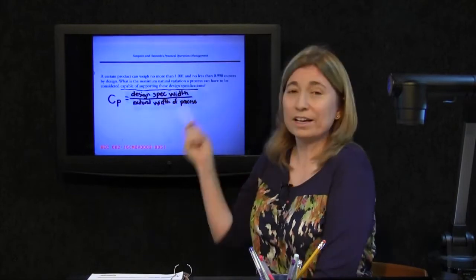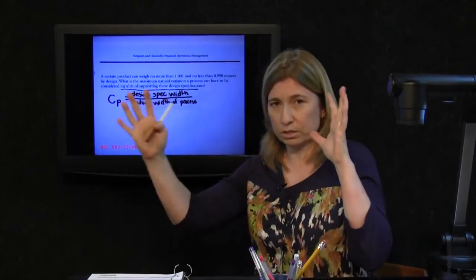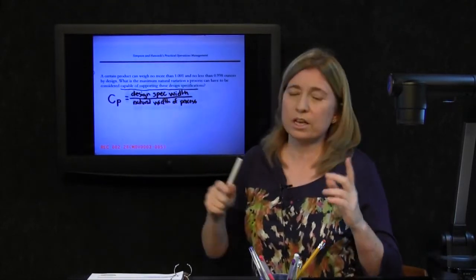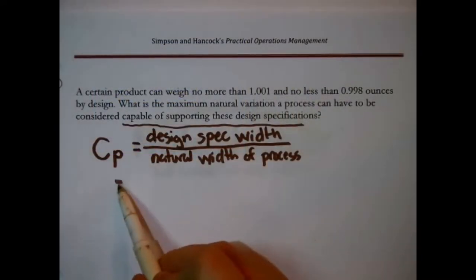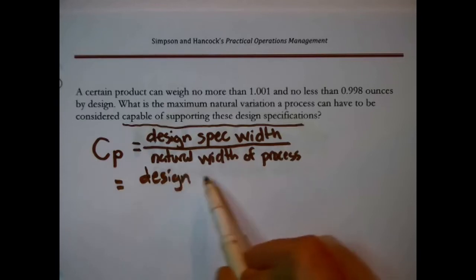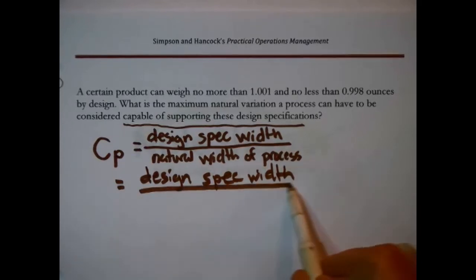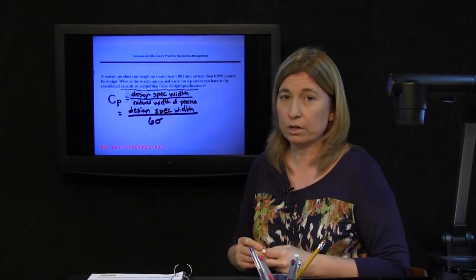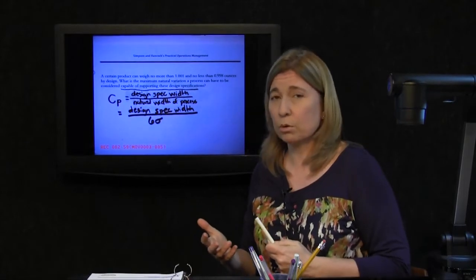Design specification width, I can see that actually in this short problem. That business about the 1.001 and the 0.998, it's talking about by design it can tolerate that width. But what's this natural width of the process? Another way to state this particular formula for the process capability index is the same business in the numerator, design specification width. But it's agreed upon that another way to characterize the natural width of the process is 6 times the standard deviation in the variation in that process. 6 times the standard deviation, 6 sigma, that's where we get that very familiar phrase in quality control, 6 sigma.